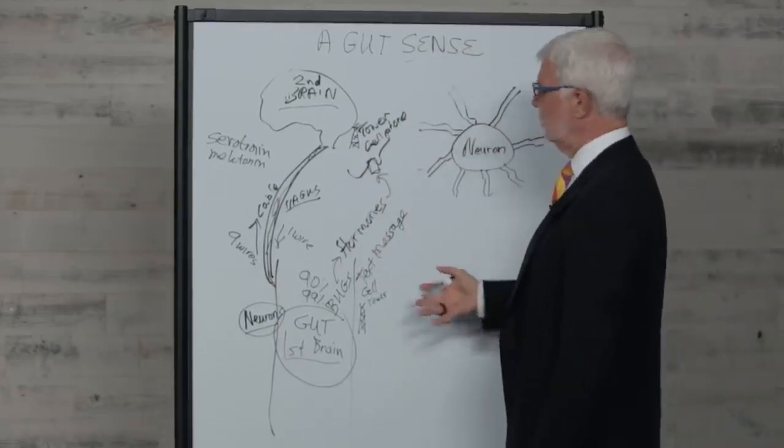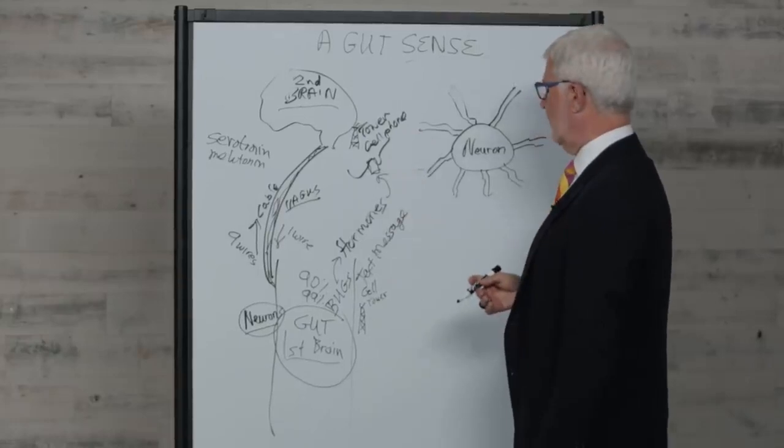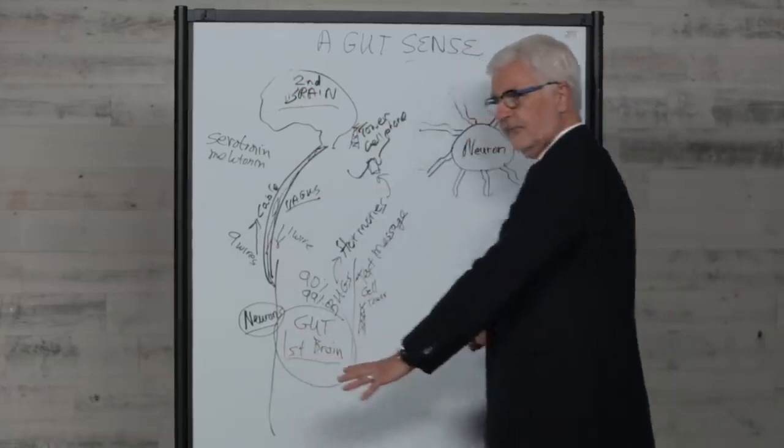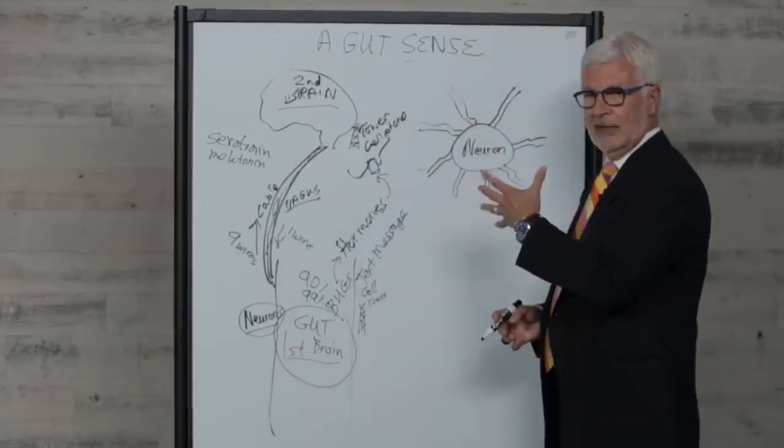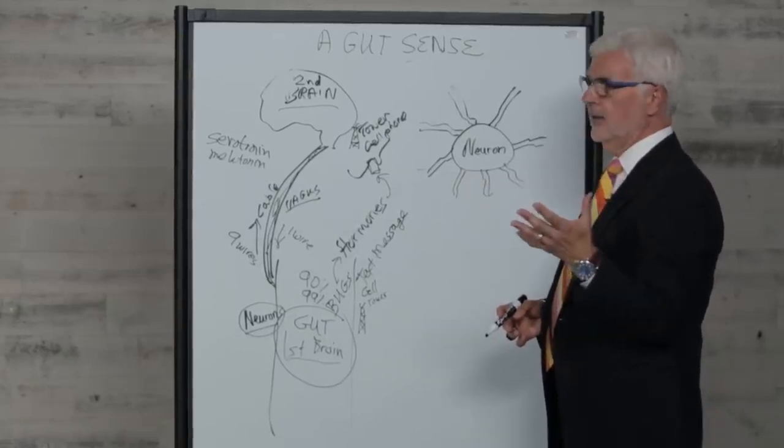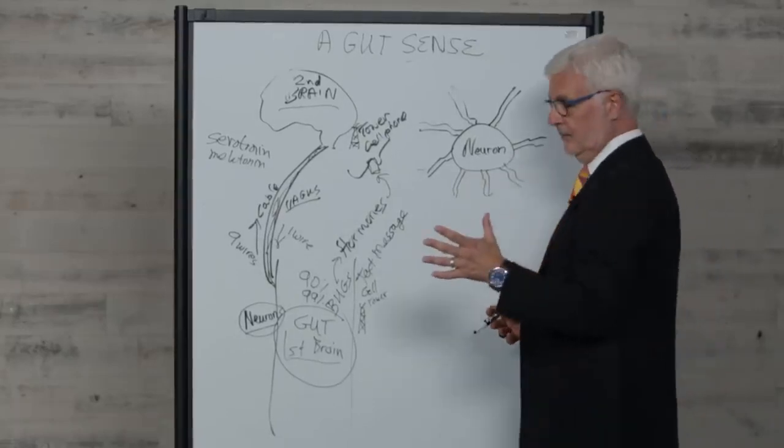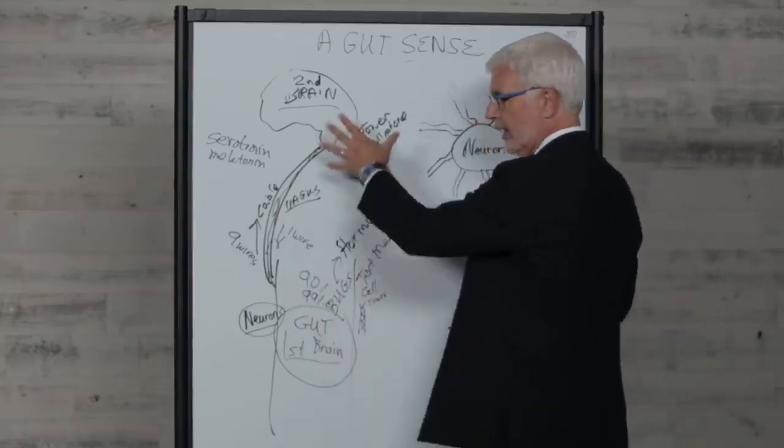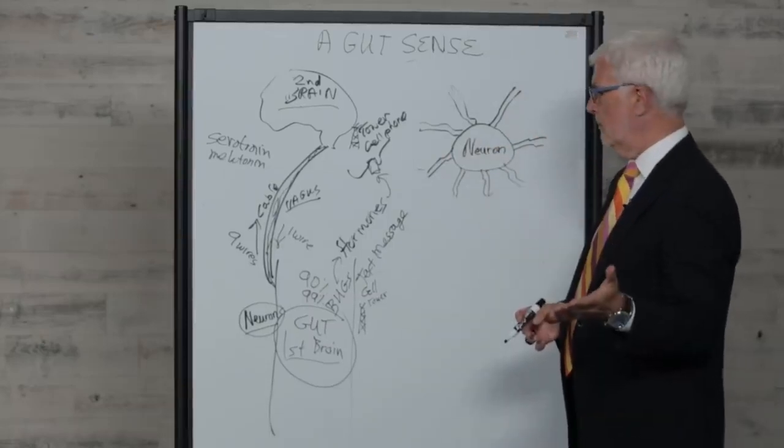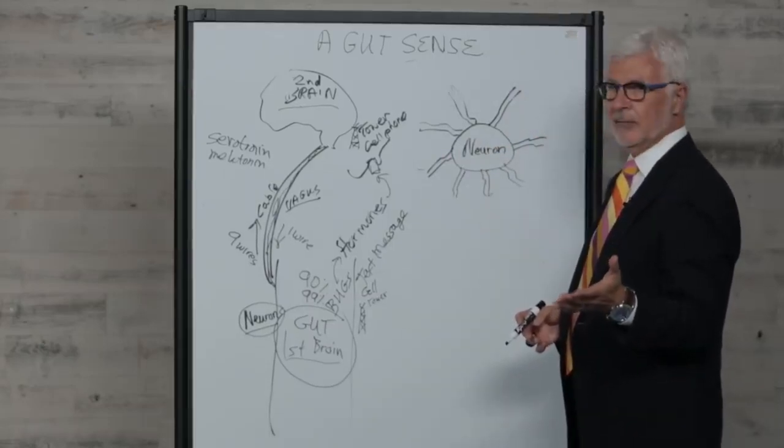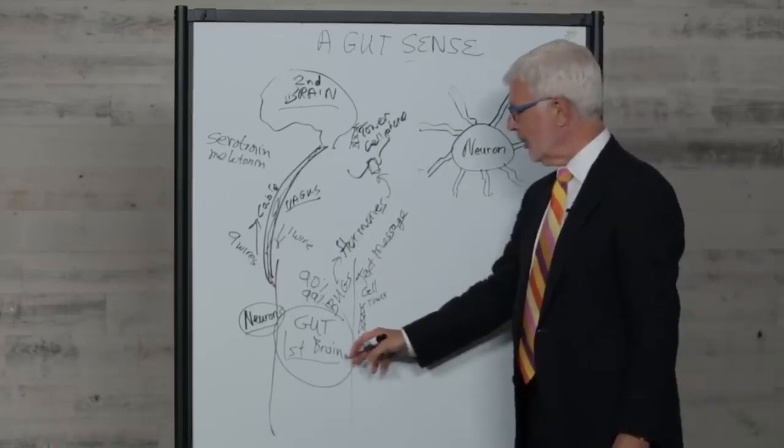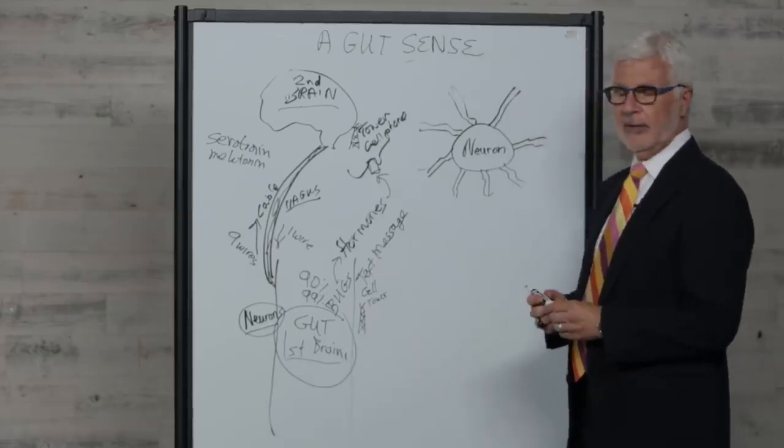Rather than a top-down information system of the brain being in control of us, it's actually at least equal between the gut and the brain. I think in terms of our short-term and long-term health, the first brain down in the gut is probably the big winner long-term.